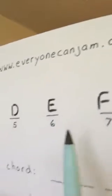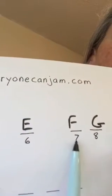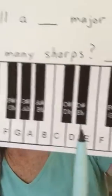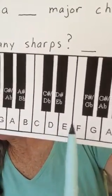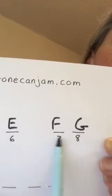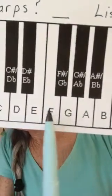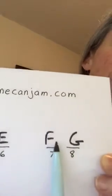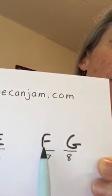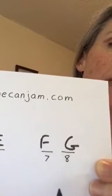E to F: the sixth note and the seventh note are supposed to be a whole step. Is E to F a whole step? No — that's a half step. And our seventh and eighth note is supposed to be a half step: F to G. What is that? F to G is a whole step, and we're supposed to have a half step there. So the way we fix that is we turn this F into F sharp. Sharp means you just make it a little higher, so we're going to write F sharp there.